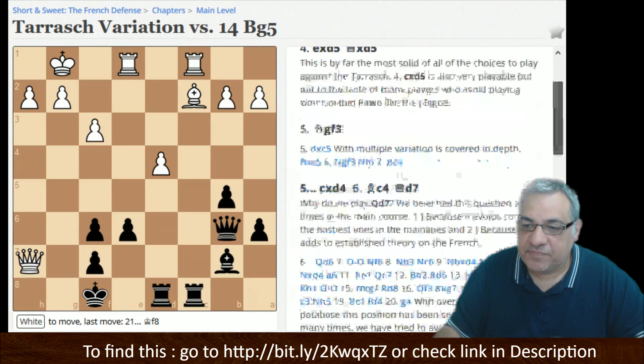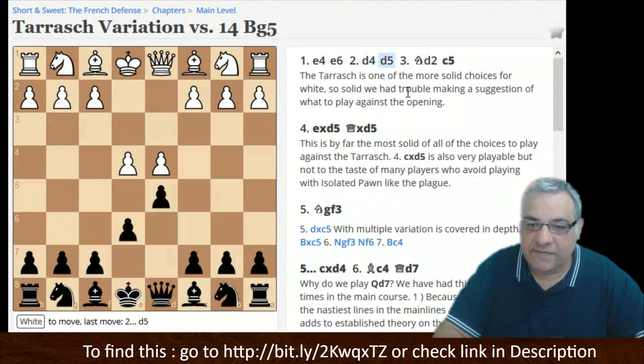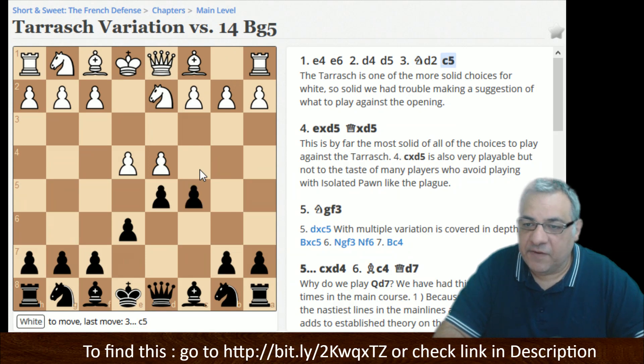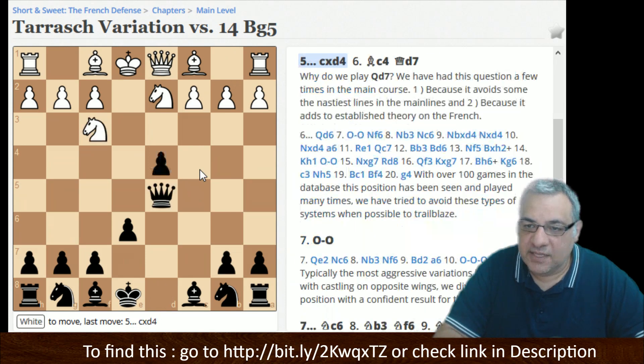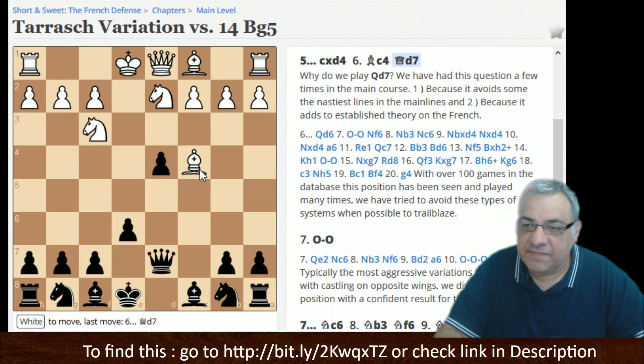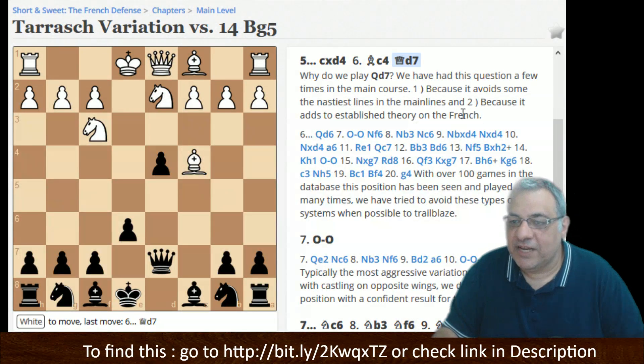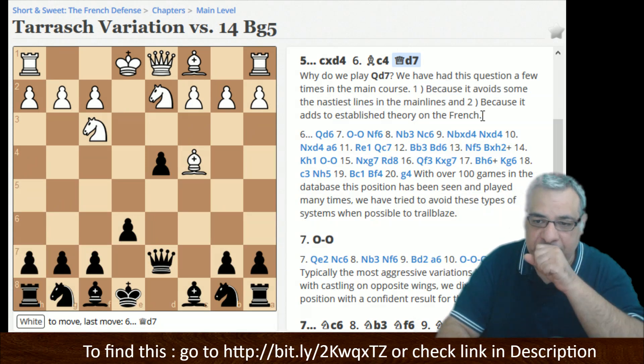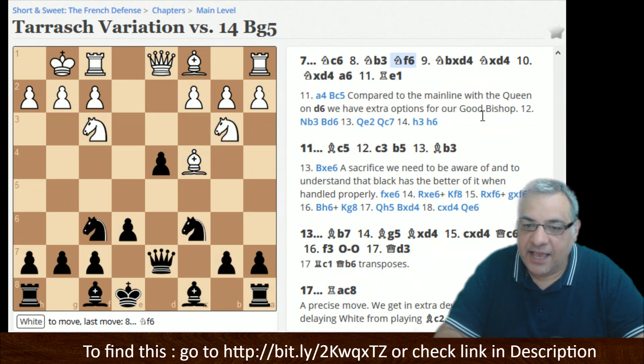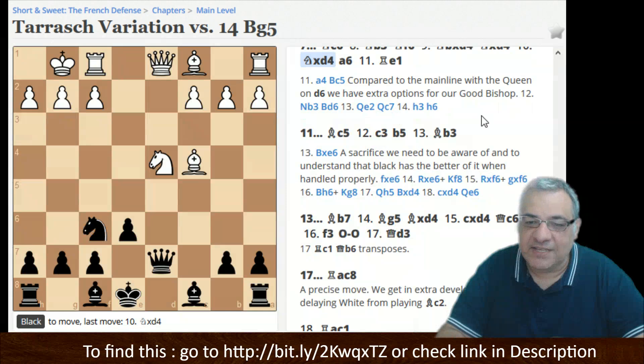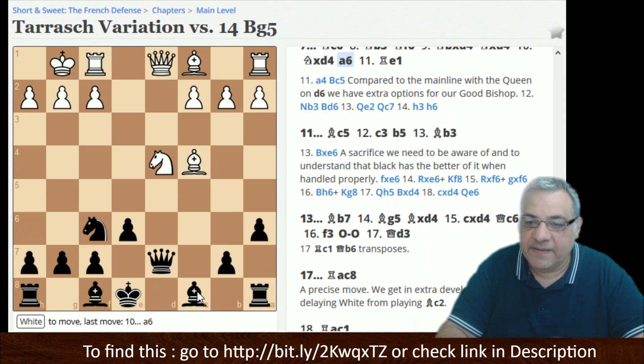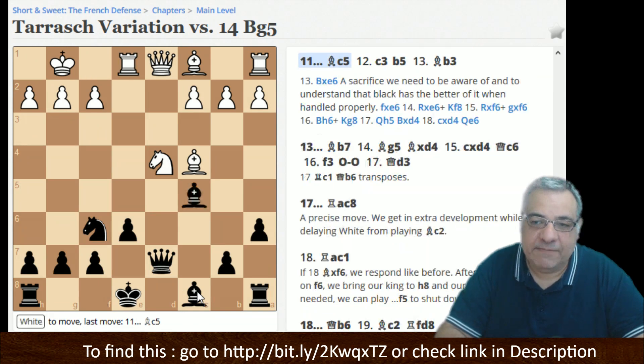Let's have a look at this in the Tarrasch Variation. So e4 e6 d4 d5, the Tarrasch knight d2 which avoids the pin of the Winawer c5 e takes Queen takes. This is all pretty standard stuff. Queen d7. And Queen d7 is the recommendation, so avoid some of the nastiest lines of the main line and it adds to establish theory in the French. On e castles knight c6, and basically there's a really nice attitude here of solving that fundamental issue in the French, this bishop. Solve it with seemingly casualness to what's happening on the kingside.